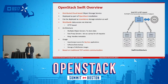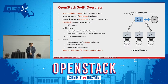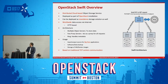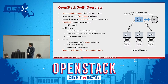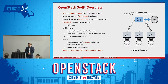Swift can handle many different use cases — for example, big data applications, software data backup, and storing VM or container images. However, the problem is that the default Swift implementation still uses traditional TCP/IP socket-based communication, which is not high-performance. The RDMA technology can do much faster than that.